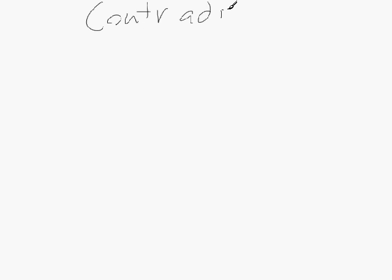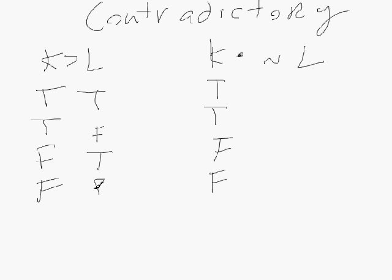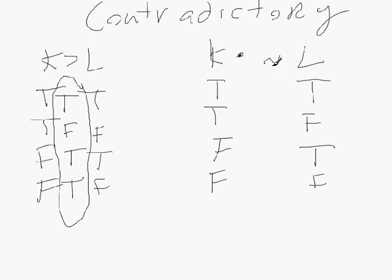Now let's look at contradictory. We'll keep K→L as the first statement, but the second will be K∧¬L. Laying in the values: true true, true false, false true, false false for K and L. K→L gives true false true true — I'll circle that. ¬L is false true false true.